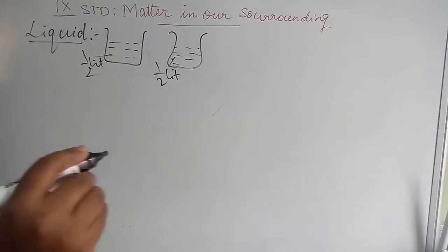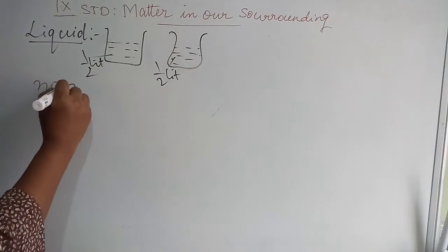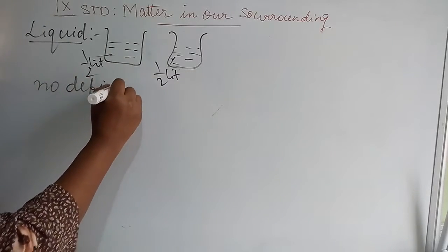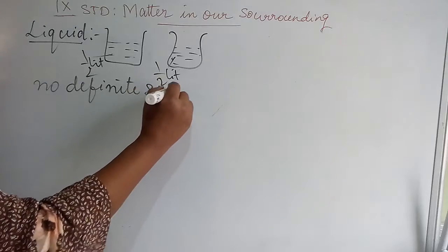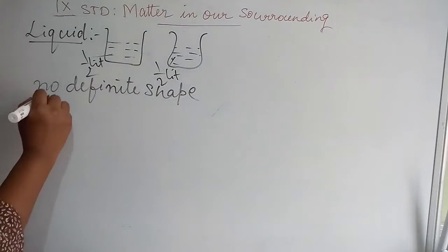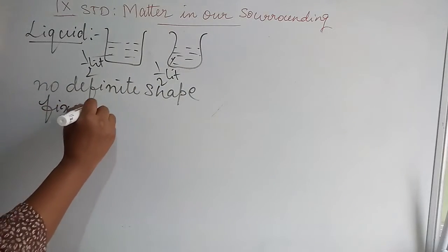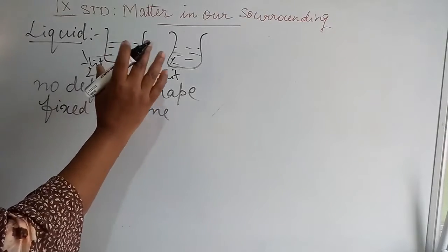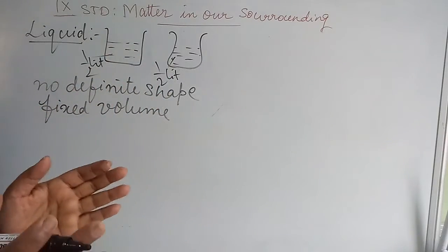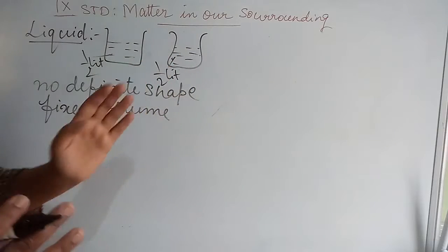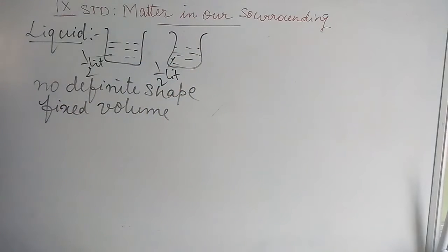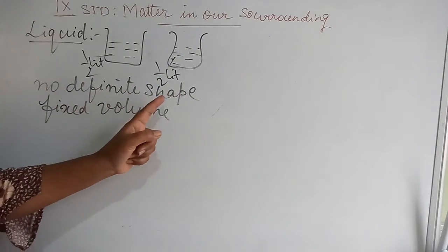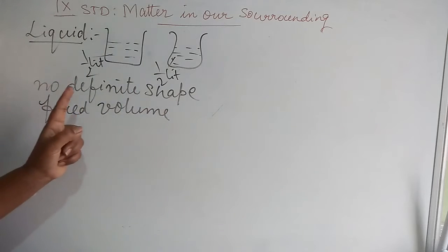That means liquids have a fixed volume but no definite shape. They take up a certain amount of space in a container. That is why we say liquids have no definite shape but have a fixed volume. They take the shape of whatever container we pour them into.